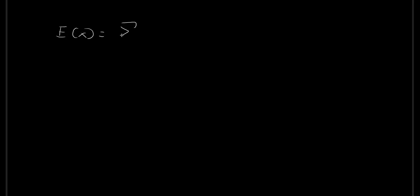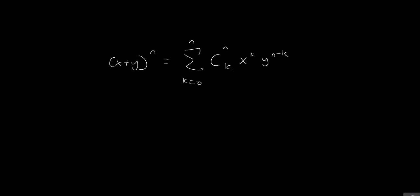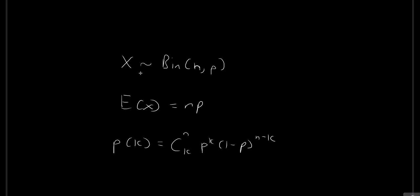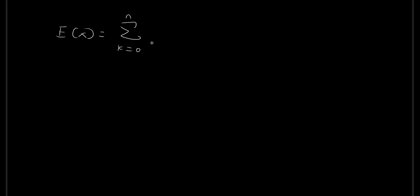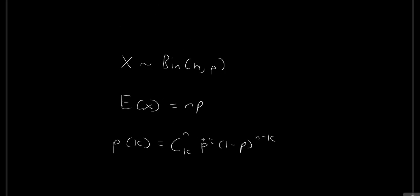Starting off, the expected value is equal to the sum from k equal to 0 all the way to n, because k is just the number of values that the random variable x can take on, and that can range from 0, 1, 2, 3, all the way to n — so it's in discrete steps. For every single possible value, we multiply it with the corresponding probability p of k, which is given by the binomial distribution formula.